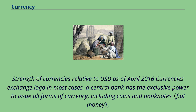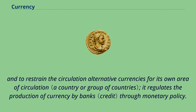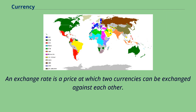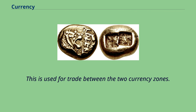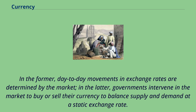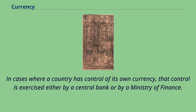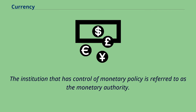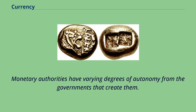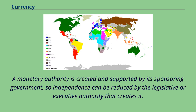In most cases, a central bank has the exclusive power to issue all forms of currency, including coins and banknotes, and to restrain the circulation of alternative currencies for its own area of circulation; it regulates the production of currency by banks through monetary policy. An exchange rate is a price at which two currencies can be exchanged against each other, used for trade between the two currency zones. Exchange rates can be classified as either floating or fixed. In a floating system, day-to-day movements in exchange rates are determined by the market; in a fixed system, governments intervene to buy or sell their currency to balance supply and demand at a static exchange rate. The institution that has control of monetary policy is referred to as the monetary authority, and monetary authorities have varying degrees of autonomy from the governments that create them.